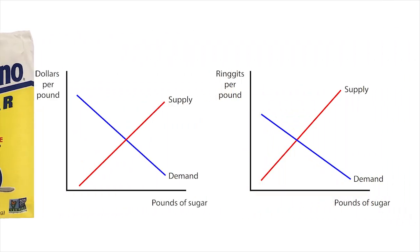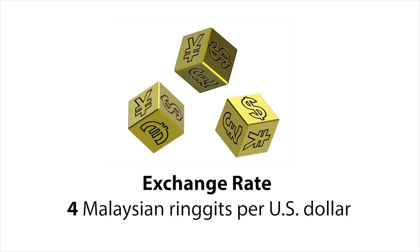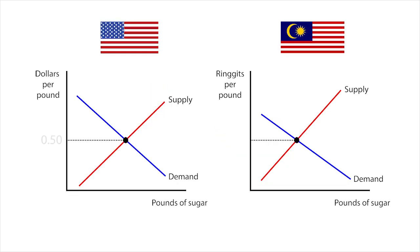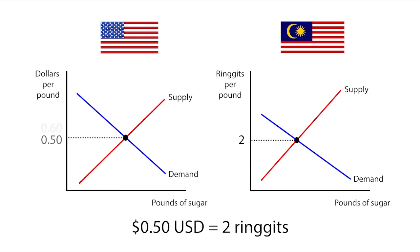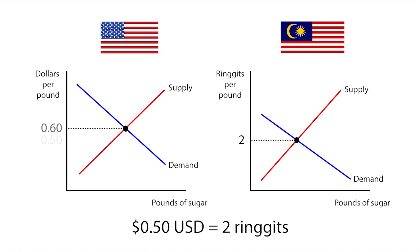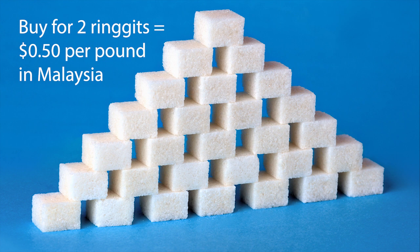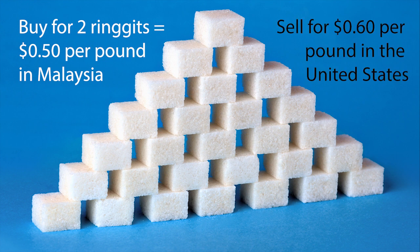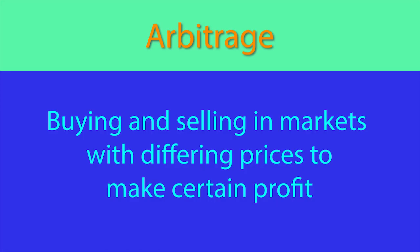For example, suppose these are the markets for sugar in the United States and Malaysia, and that the exchange rate is 4 Malaysian ringgits per US dollar. If the price of a pound of sugar were 50 cents in the United States, the equivalent price in Malaysia would be 4 times one half, or 2 ringgits. But what if the price for a pound of sugar were 60 cents in the United States and 2 ringgits in Malaysia? Then it would be possible to buy sugar for 50 cents worth of ringgits per pound in Malaysia and resell it for 60 cents per pound in the United States for a profit of 10 cents per pound. We can use the word arbitrage to describe such buying and selling in markets with differing prices to make a certain profit.